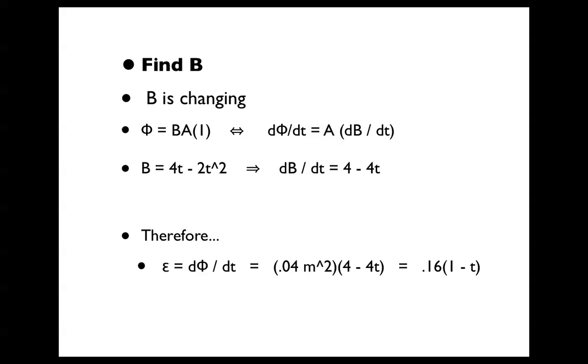Therefore, the EMF of the B field will be d phi over dt, which is area times dB/dt, which makes 0.04 m squared times 4 minus 4t, giving us 0.16 times 1 minus t.